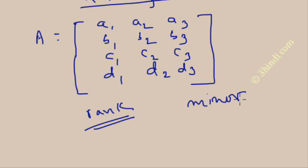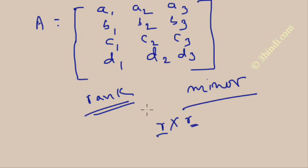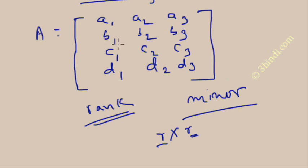First you should know what is a minor. A minor of any matrix is obtained by deleting any rows and columns. Suppose I want to remove one row and one column — whatever elements remain is the minor. You choose an R×R type of minor, so it should be a square matrix, either 3×3, 4×4, or similar, formed by deleting rows and columns.